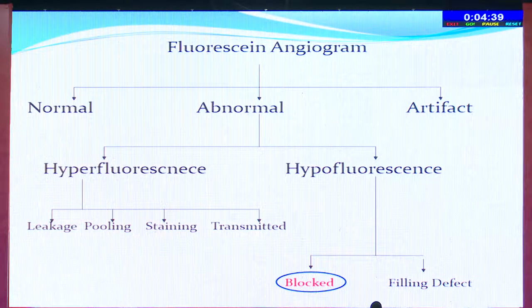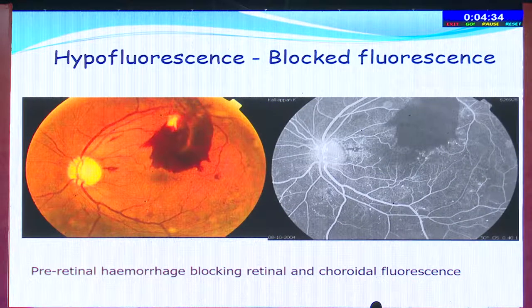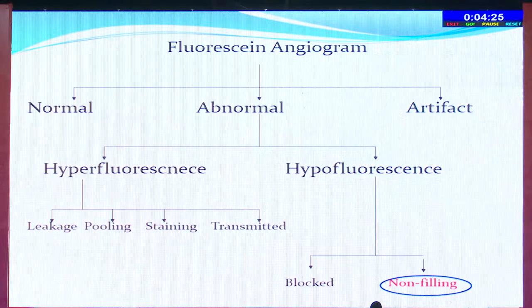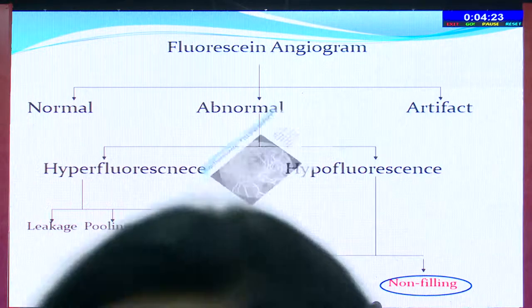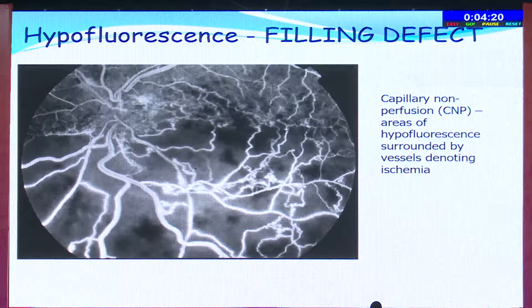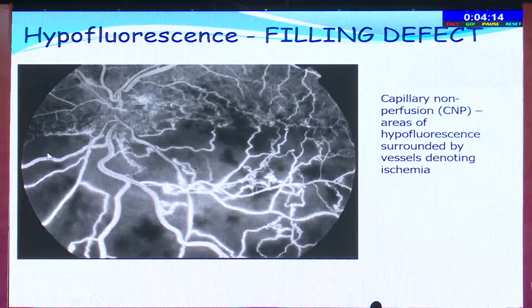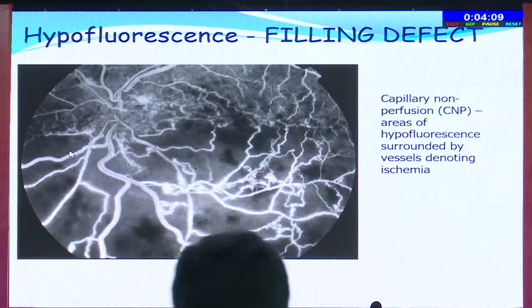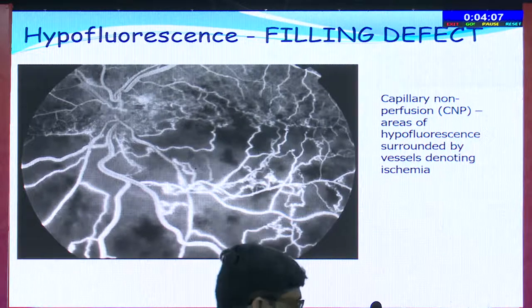Coming to hypofluorescence, you can have two types: blocked fluorescence and filling defects. Blocked fluorescence is caused by anything that blocks the fluorescence — a pre-retinal, intra-retinal, or sub-retinal hemorrhage. The non-filling type refers to capillary non-perfusion defects. Here you can see a case of hemicentral retinal vein occlusion where the entire inferior half of the retina shows capillary non-perfusion — another example of hypofluorescence due to filling defect.